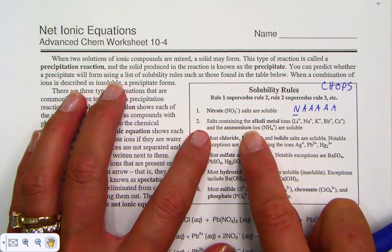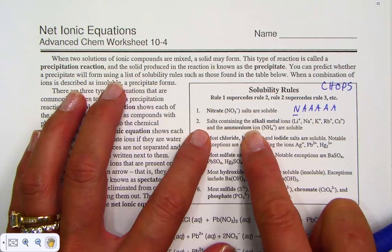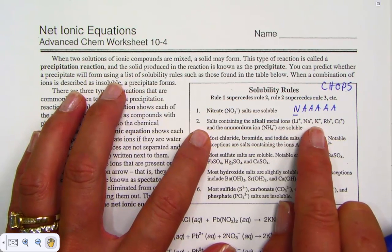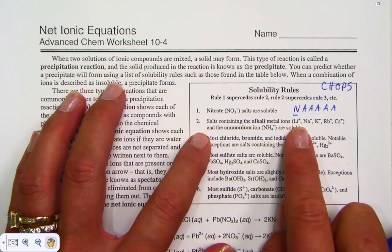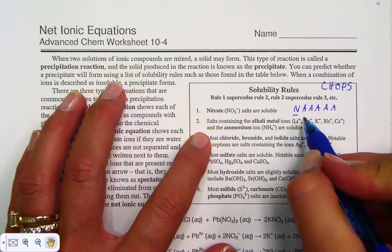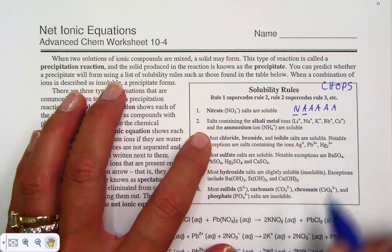Number two: Salts containing the alkali metals of lithium, sodium, potassium, rubidium, or cesium—those elements found in group 1A—the alkali metals are always soluble.